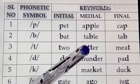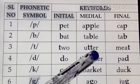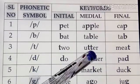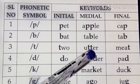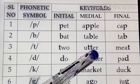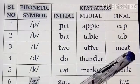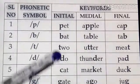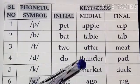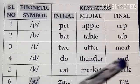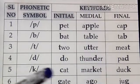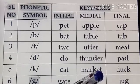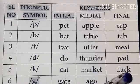Here we have to understand there are two letters doubling — 'tt' — but even though there are two letters, the sound is a single one. For example, 'utter' — that is /t/. Next, /d/ as in 'thunder', and /k/ as in 'cat', 'market', 'seek', 'duck'.